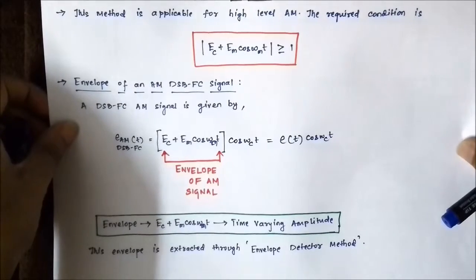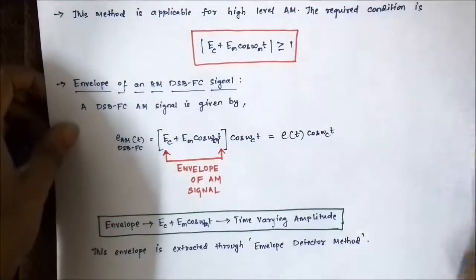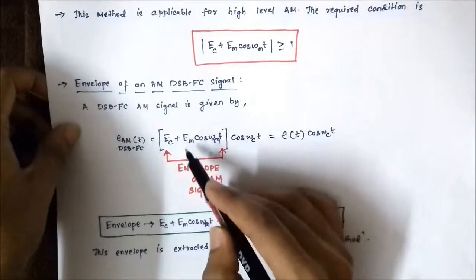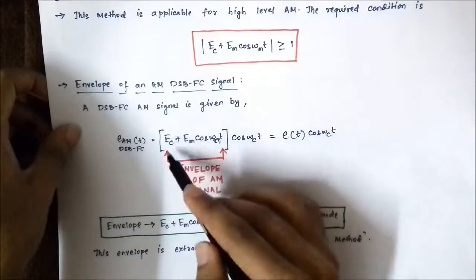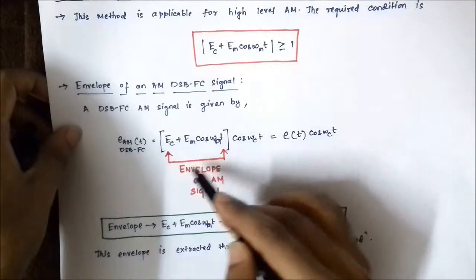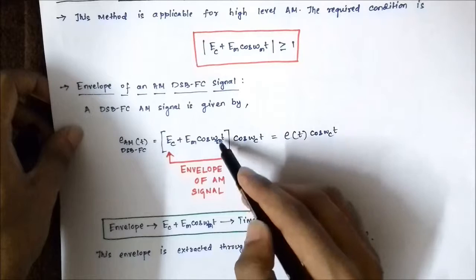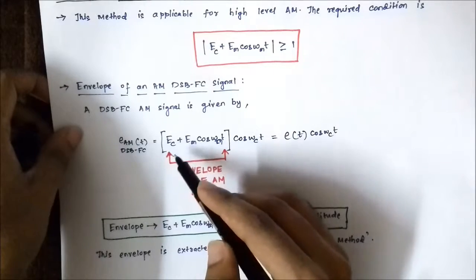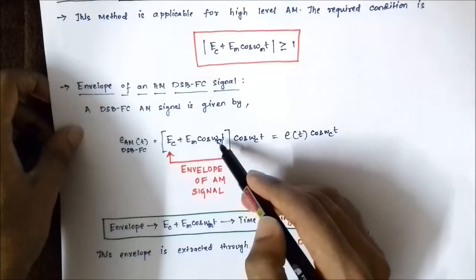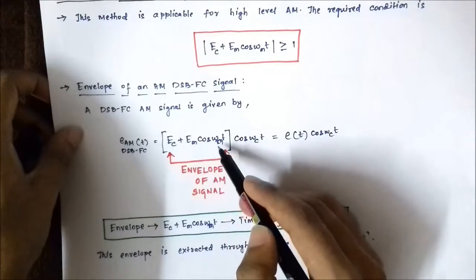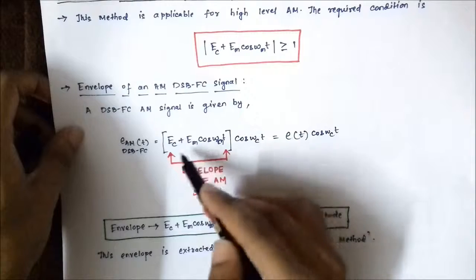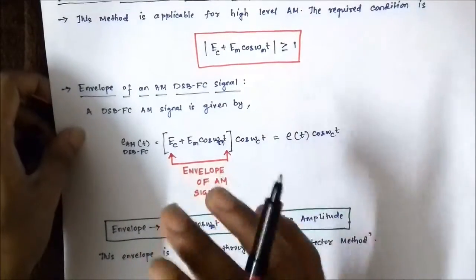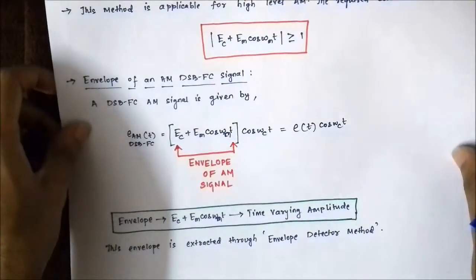It is this envelope which is extracted so as to get the EM·cos(ωm·t) part, which is the message signal. If we extract the envelope of this double sideband full carrier signal, it will be easy to extract the message signal with a suitable filter, since EC is the DC component which will be blocked. We need the EM·cos(ωm·t) part, so we must extract this envelope — the time-varying amplitude e(t) — from the DSBFC signal. This is what is done in the envelope detector method.